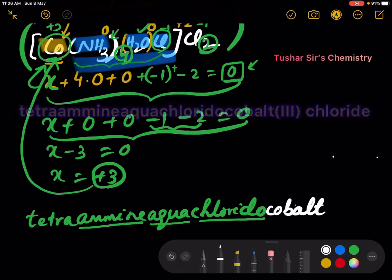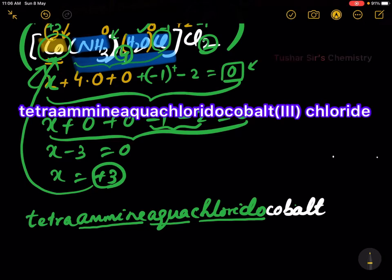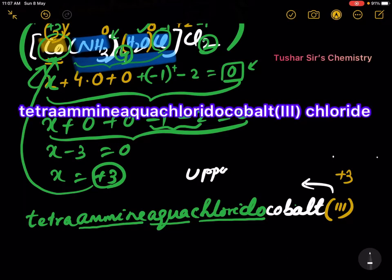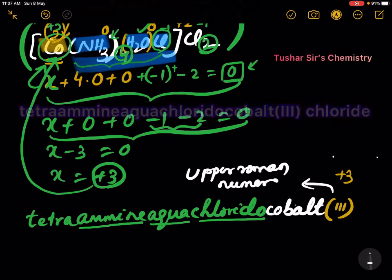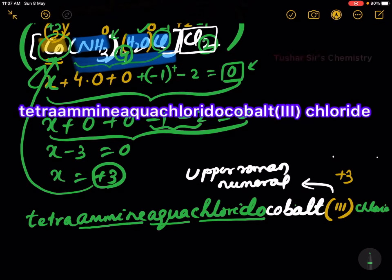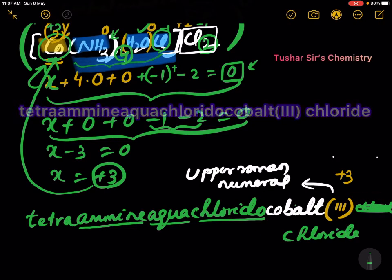After cobalt, we have to write the oxidation number in upper Roman numerals — this is plus 3, written as Roman numeral III in parenthesis. Then, the counter ion is written after the square bracket. That is chloride. So the name is: tetramine aqua chlorido cobalt(III) chloride.